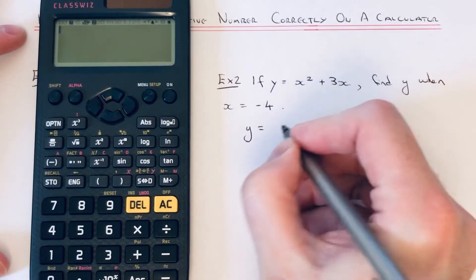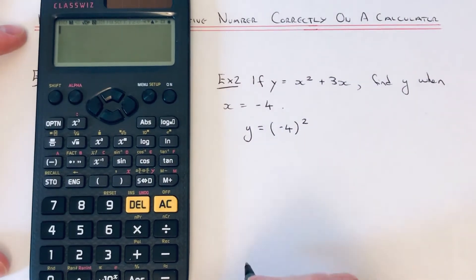Let me show you how to do this correctly. If we substitute minus 4 in, since that's been squared, that first term, we need to put it in a bracket if you're typing it in on your calculator.